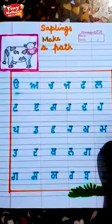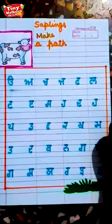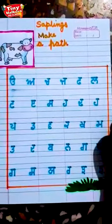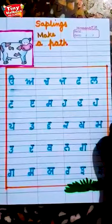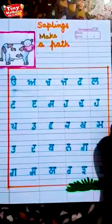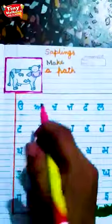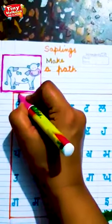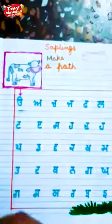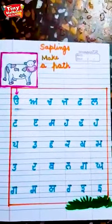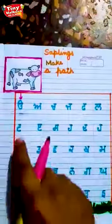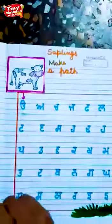We will speak the alphabets in order so that the cow will follow that path. Now let's see. First letter is ura. So first the cow will go to ura. Cow where are you? Ura. After ura what comes?